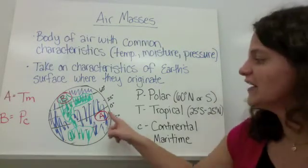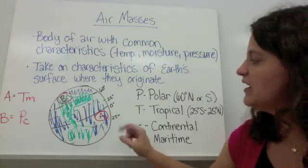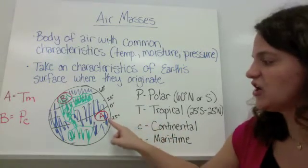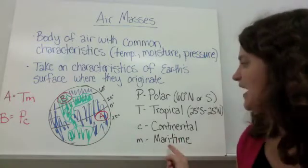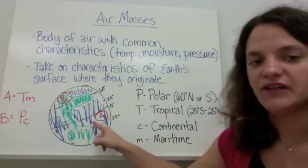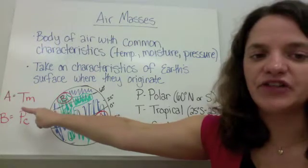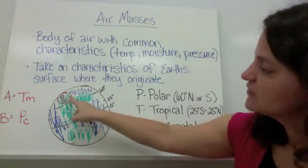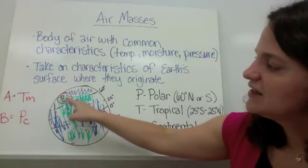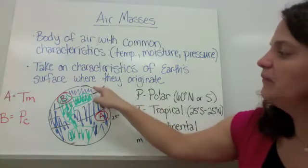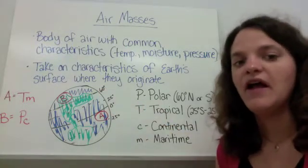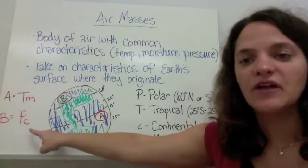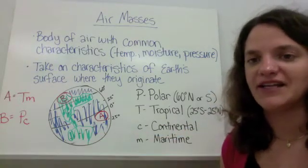For example A, an air mass forming here would be tropical because it's between 25 degrees south and 25 degrees north, and maritime because it's forming over the ocean. So you'd describe it as capital T, lowercase m. For example B, an air mass forming over land north of 60 degrees north latitude would be described as capital P for polar and lowercase c for continental.